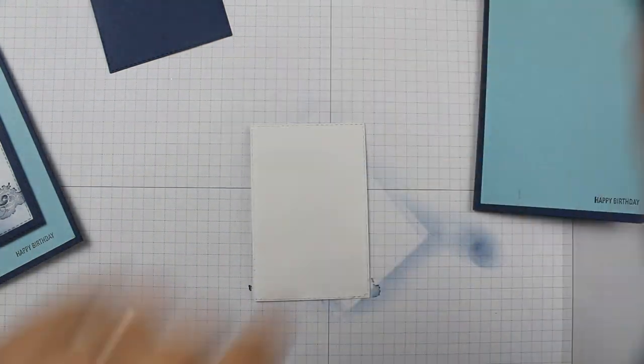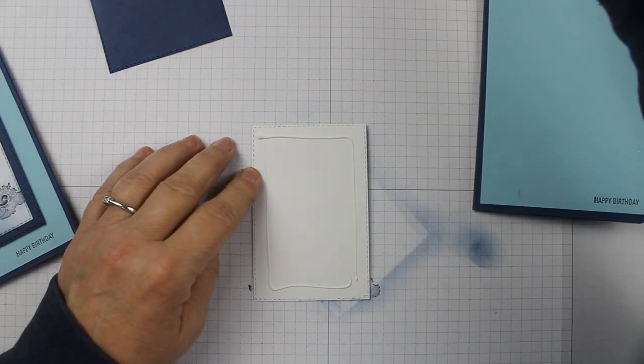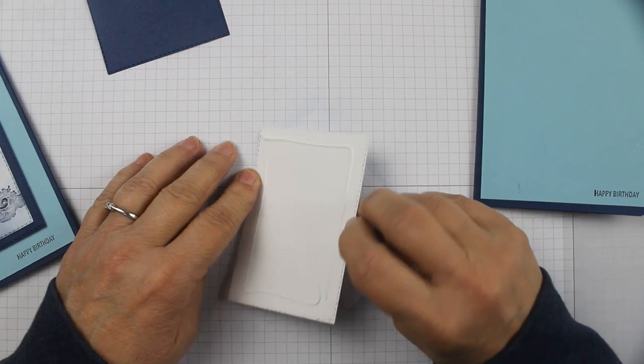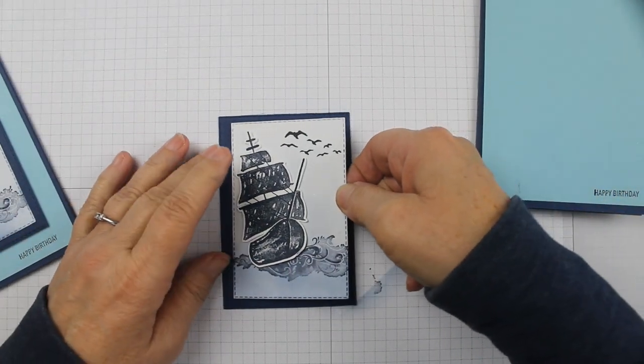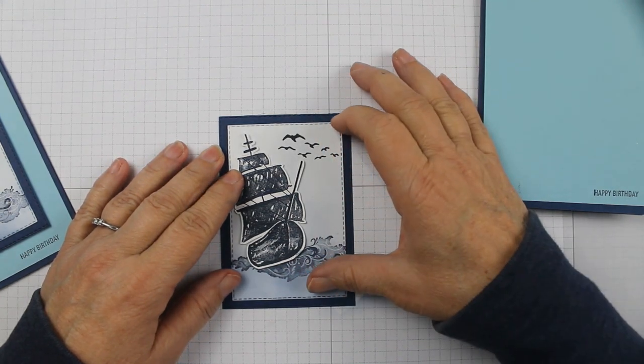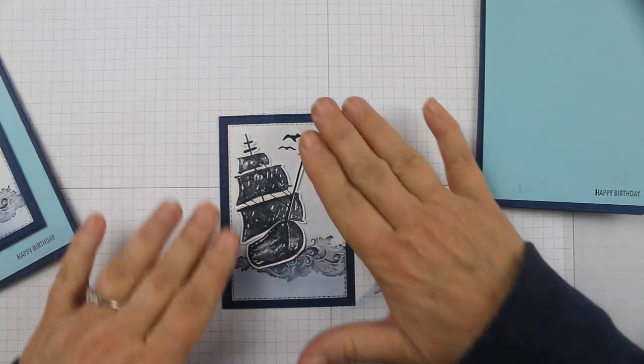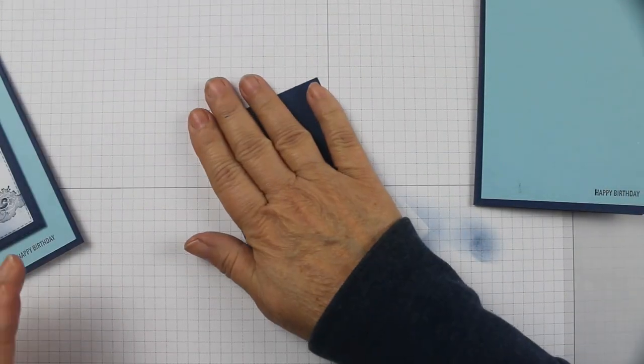Okay, so then you're going to glue that to your Night of Navy piece. Get it all centered on there real nice. This is just a cool, such a quick and easy beautiful classic looking masculine birthday card.